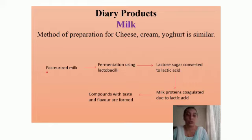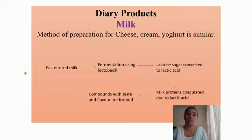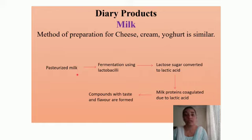Pasteurized milk is taken — the milk that we get at home is always pasteurized, meaning it is heated at a certain temperature to kill all unwanted microorganisms. Such pasteurized milk is then fermented using Lactobacilli, a bacteria that is added to the milk to bring about fermentation.